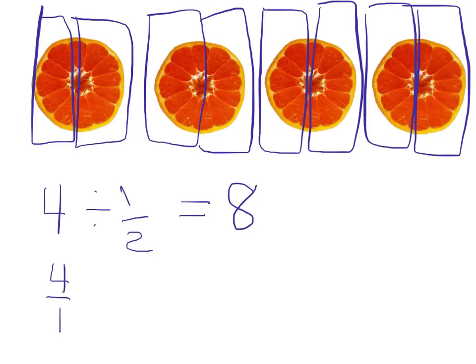4 over 1 multiplied by 2 over 1. That equals 8. Amazing. The number matches exactly what we expected to get. Because we had 4 objects and we put them into groups of 1 half. That's how you divide fractions.